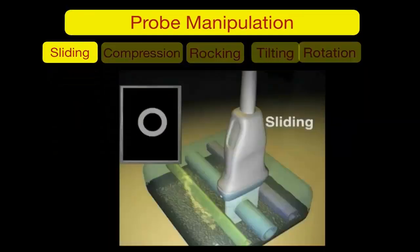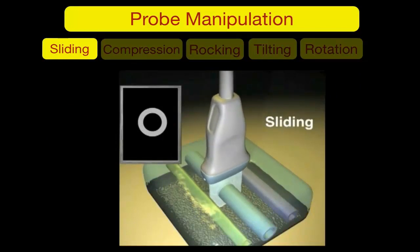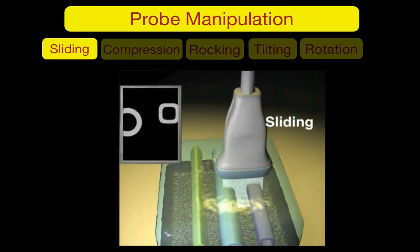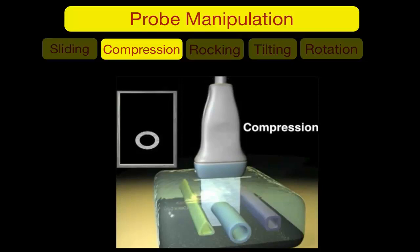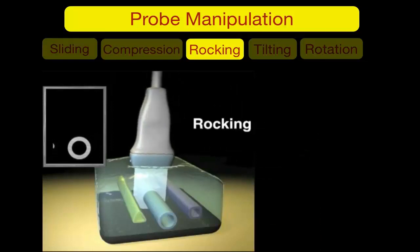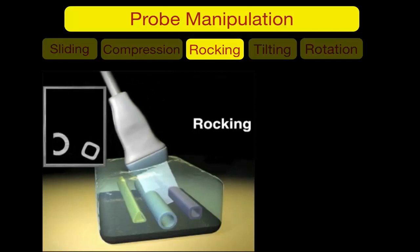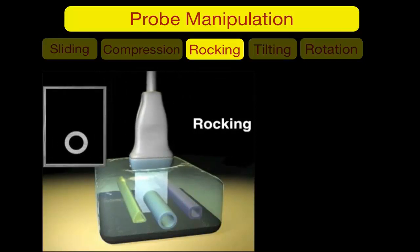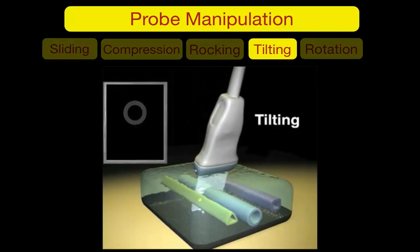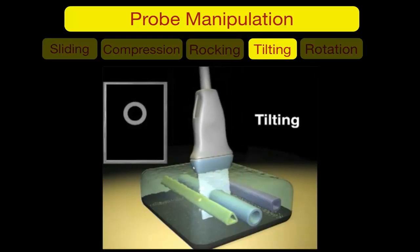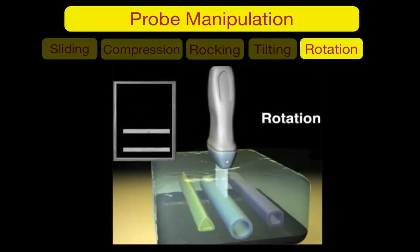Probe manipulation techniques include: Sliding — moving the probe from one point to another, forward, backward, or side to side. Compression — applying vertical pressure on a structure to differentiate artery from vein and check venous patency. Rocking — used with a small acoustic window to spread ultrasound planes to other structures. Tilting — used to extend ultrasound beams along the pathway of a particular structure. Rotation — shifts between long axis and short axis views by rotating clockwise or anti-clockwise.